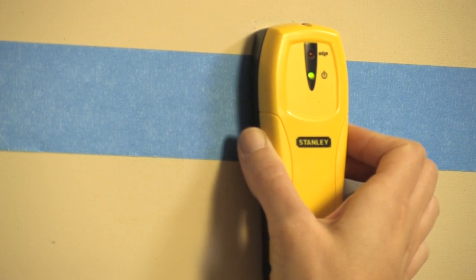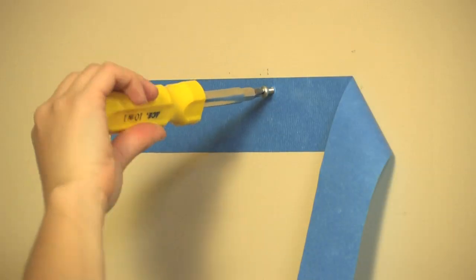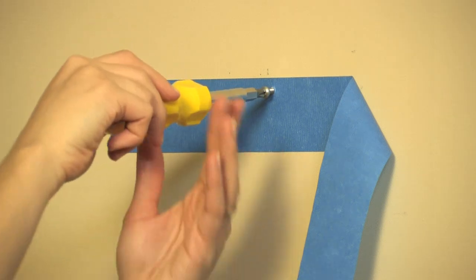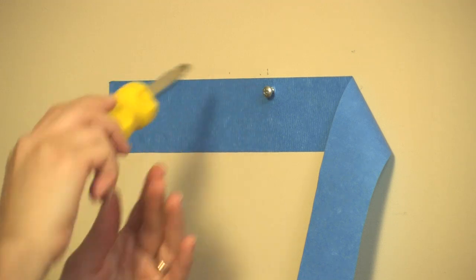Use a stud finder to determine if your insertion marks are aligned with the stud. If they are aligned with the stud, use the provided stud screws and screw directly into the wall at your mark using a Phillips screwdriver or drill with a Phillips drill bit.